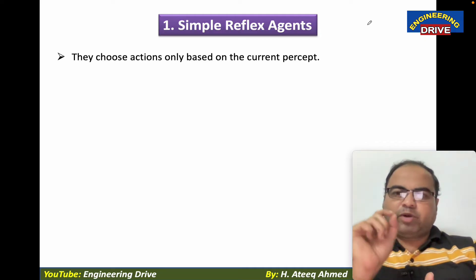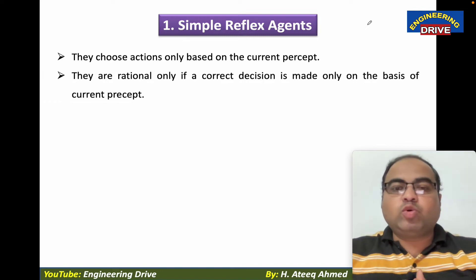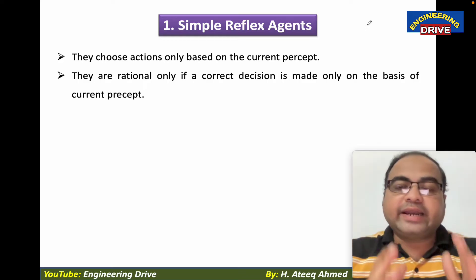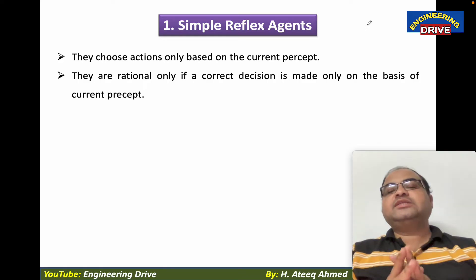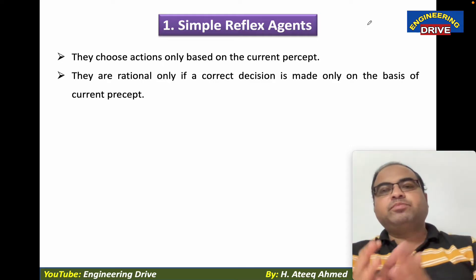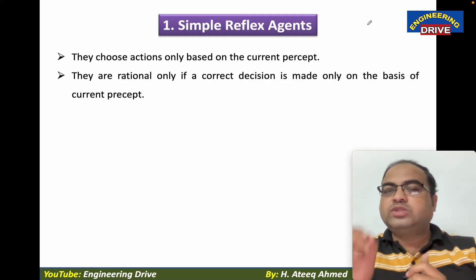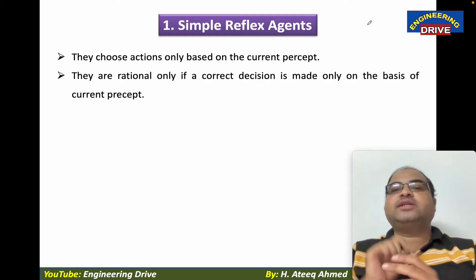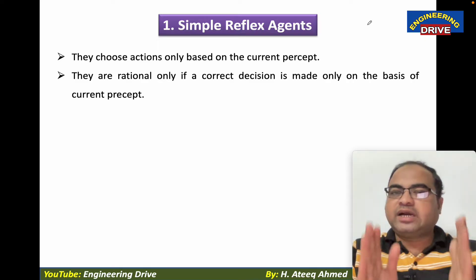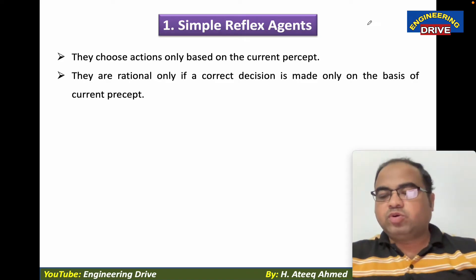This is the main point that we need to focus. They are rational only if a correct decision is made on the basis of the current percept. A rational agent is nothing but the agent which will do the right thing. We can consider simple reflex agents as rational agents, but they need to generate the right action based on only the current percept. They can't generate the right actions based on previous percept, which is mandatory here.